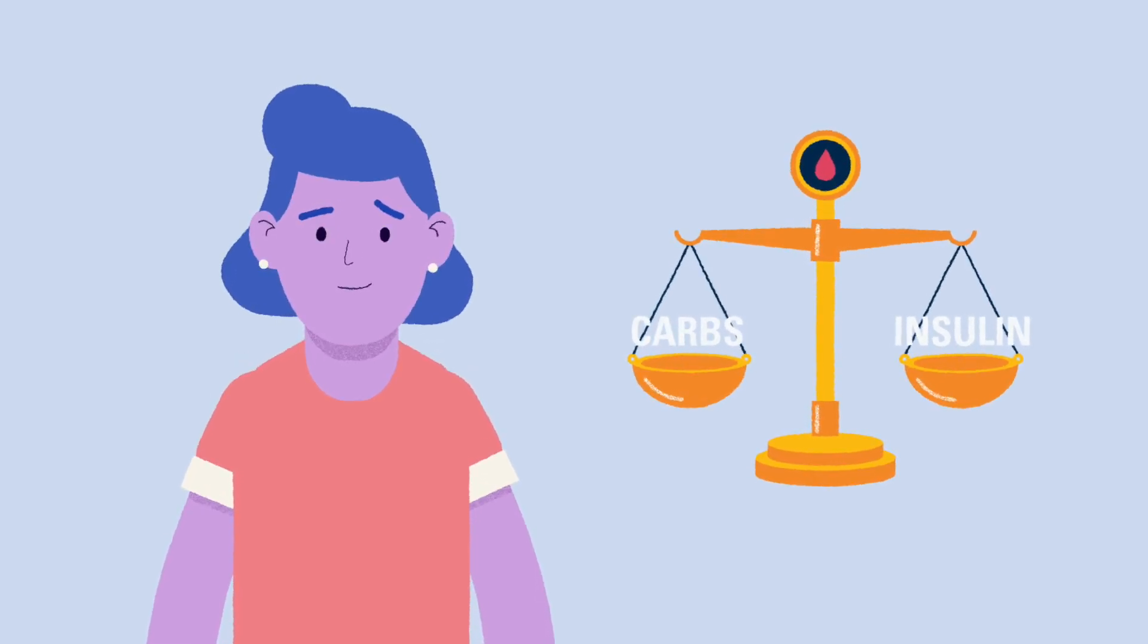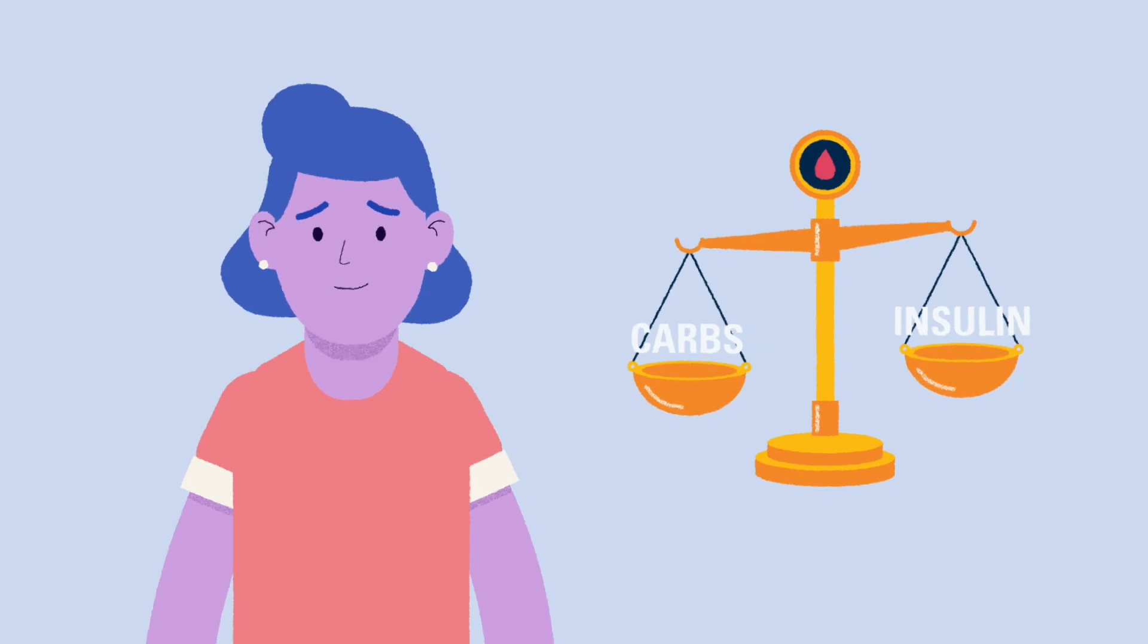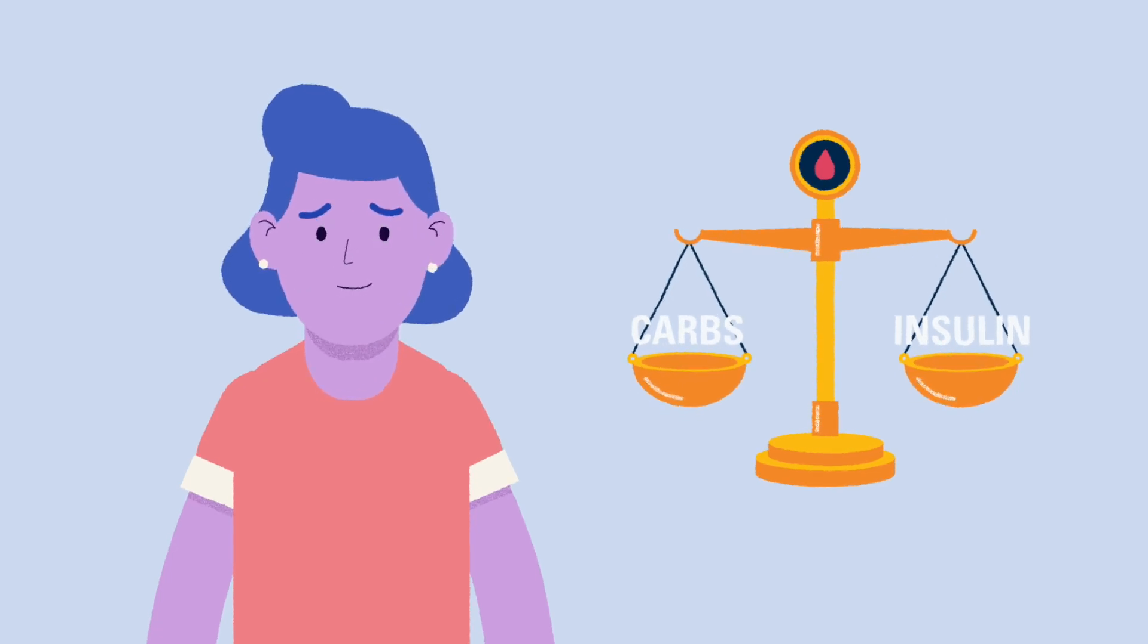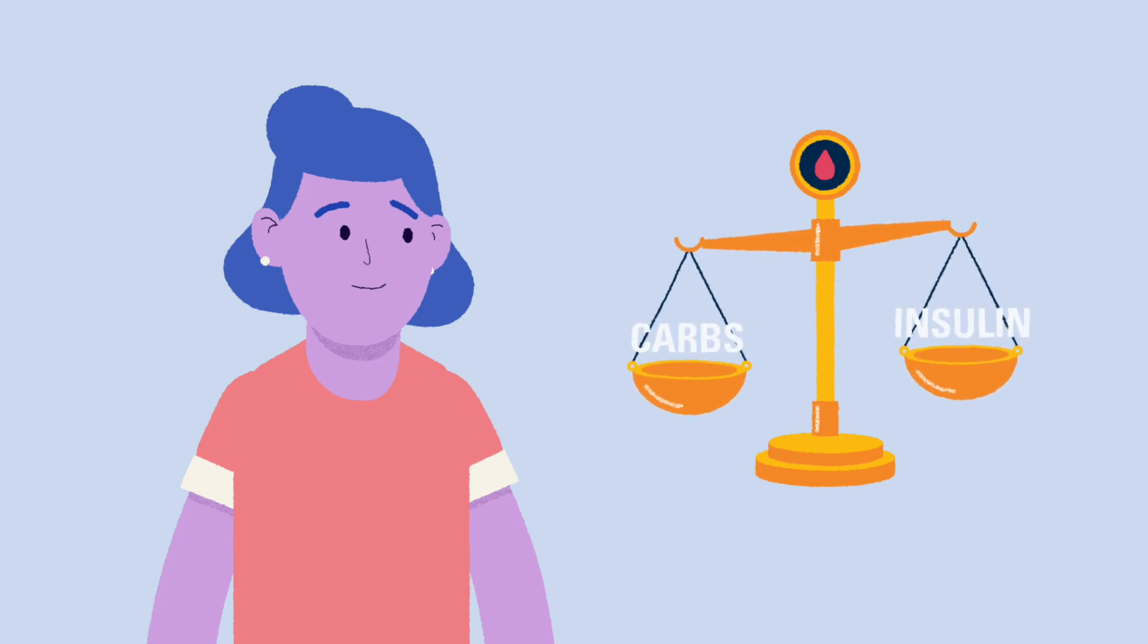After all, blood glucose never stays at one level for very long. Blood glucose can be affected by many things including the amount and type of carbs eaten, the amount of insulin that is given, the child's activity levels, and stress.